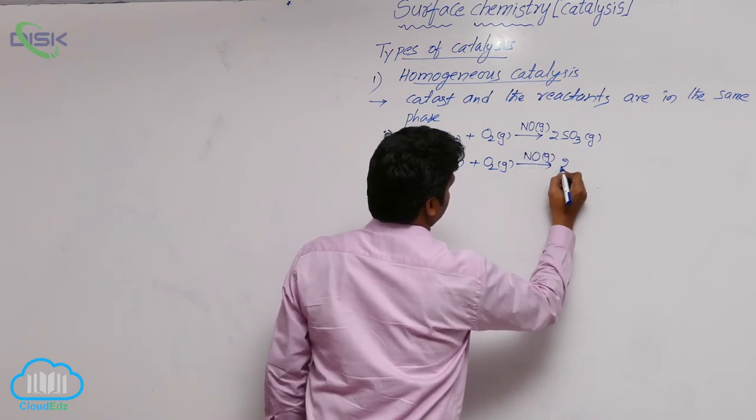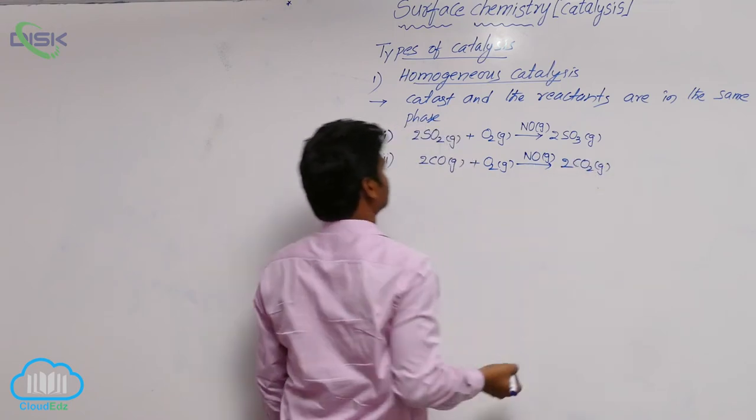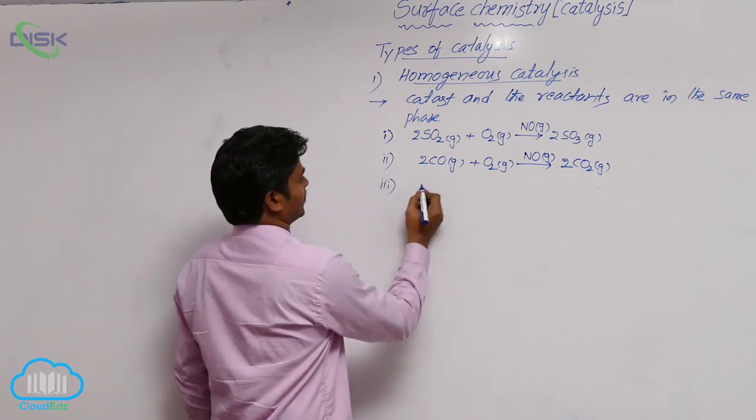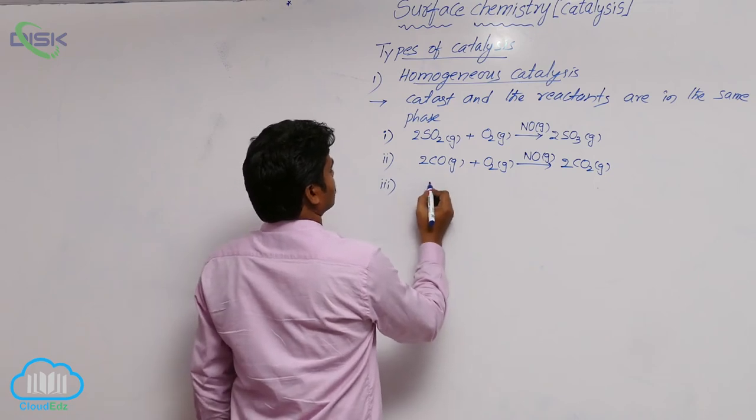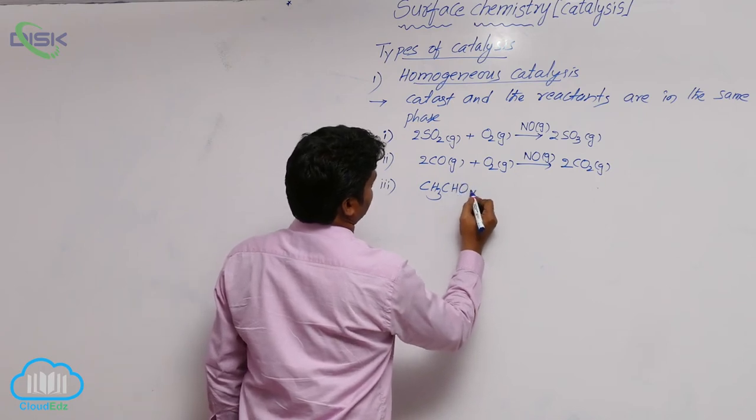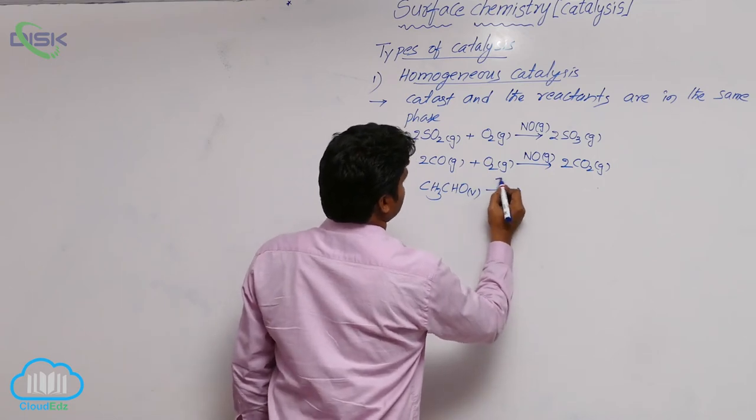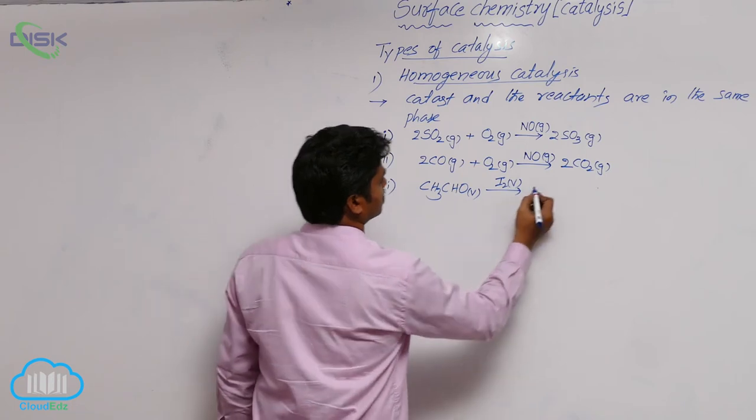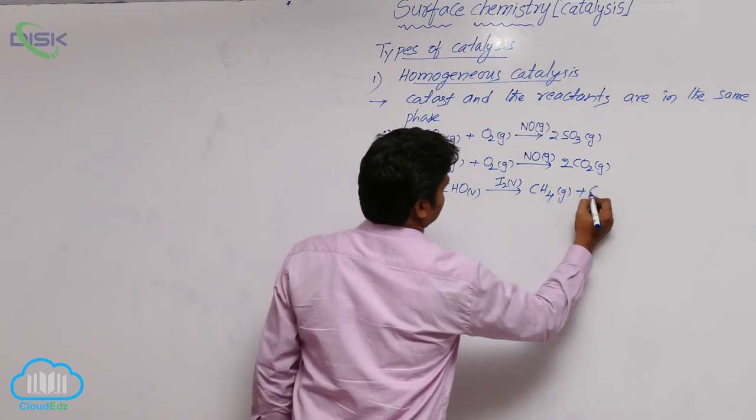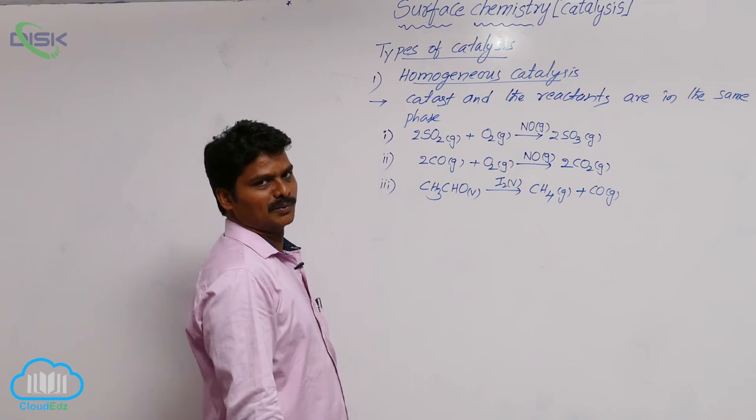Second one: 2 CO gas plus O2 gas gives rise to 2 CO2 gas. NO gas is the catalyst. Third one: in chamber, acetaldehyde vapors, CH3CHO gas, in the presence of iodine vapors, gives methane gas plus CO gas.